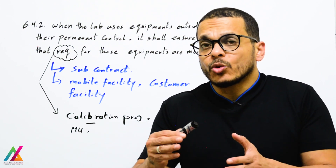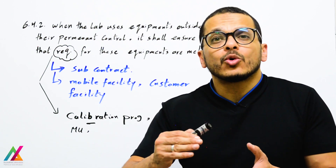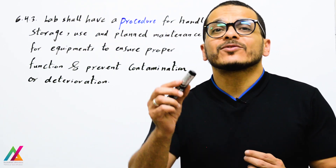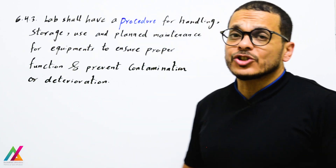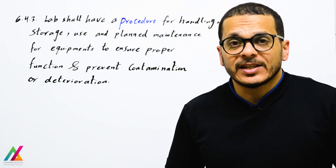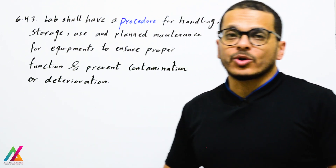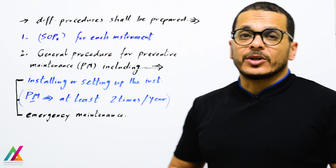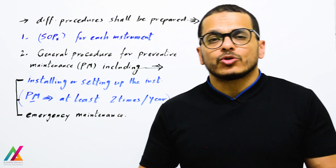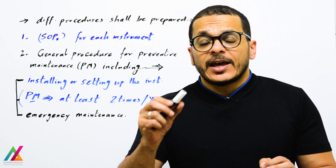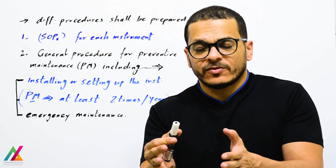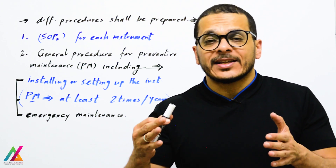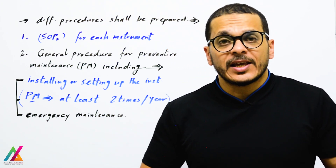The lab shall have a procedure for handling, storage, use, and planned maintenance of equipment to ensure proper function and prevent contamination or deterioration. Based on clause 6.4.3, different procedures shall be prepared. First, a standard operating procedure (SOP) for each instrument in the lab, including how to run the instrument, how to prepare a sequence, how to get results, how to calibrate it, and how to perform preventive maintenance by the analyst and engineer.